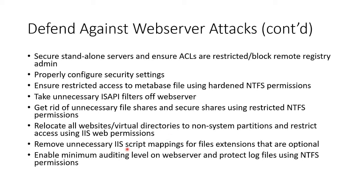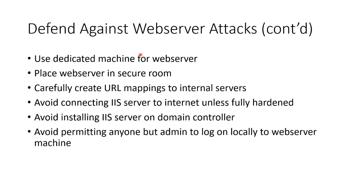Get rid of any unnecessary IIS script mappings for optional file extensions. Maintain a minimal auditing level on the web server and protect those log files using NTFS. Your web server should be a dedicated machine or a dedicated virtual machine in a physically secure location. Use URL mappings to internal servers, but be careful not to accidentally expose that information. Avoid connecting IIS or any web server to the internet until you have fully locked it down.